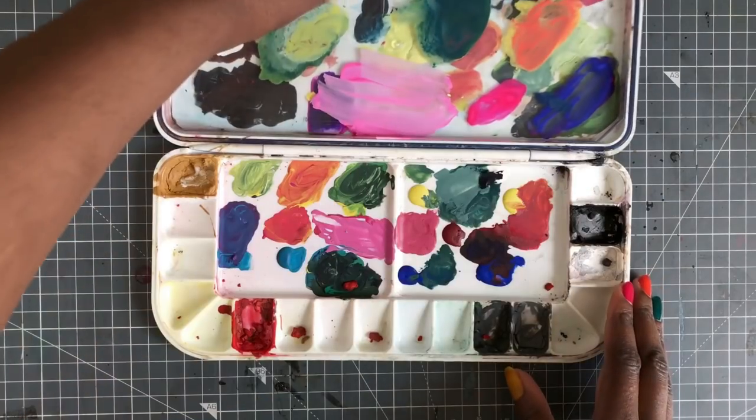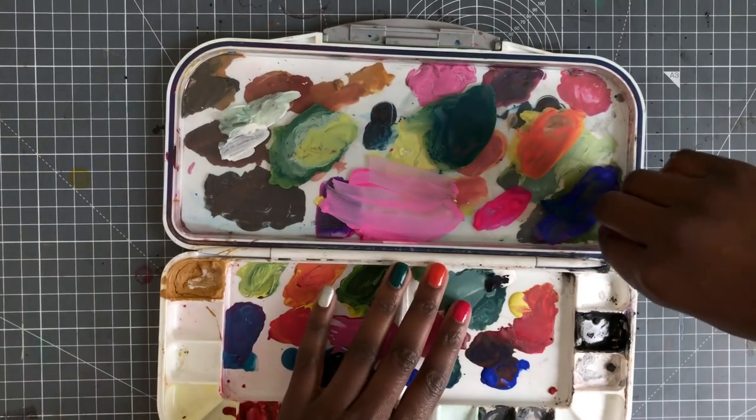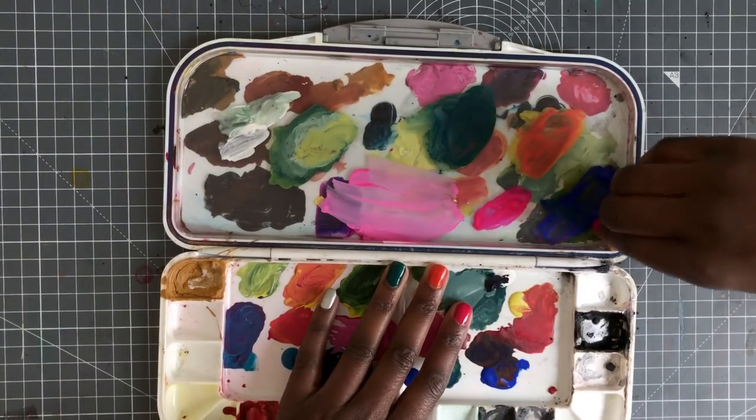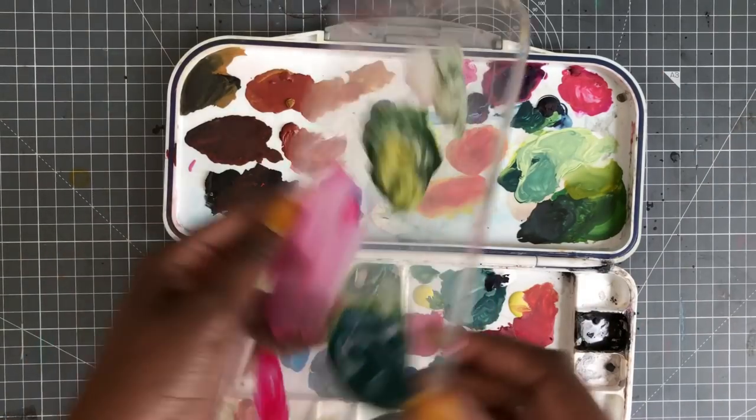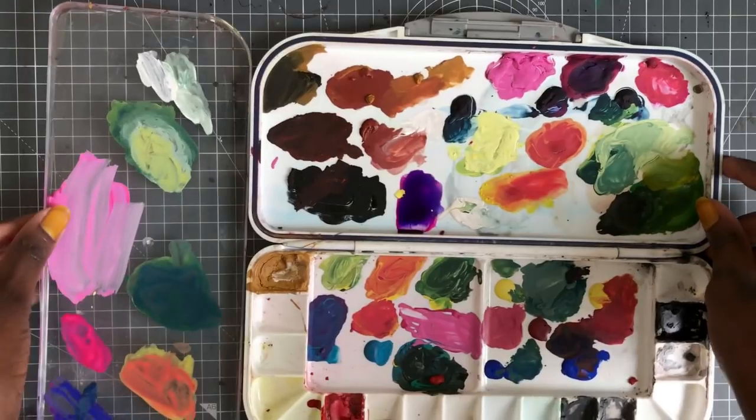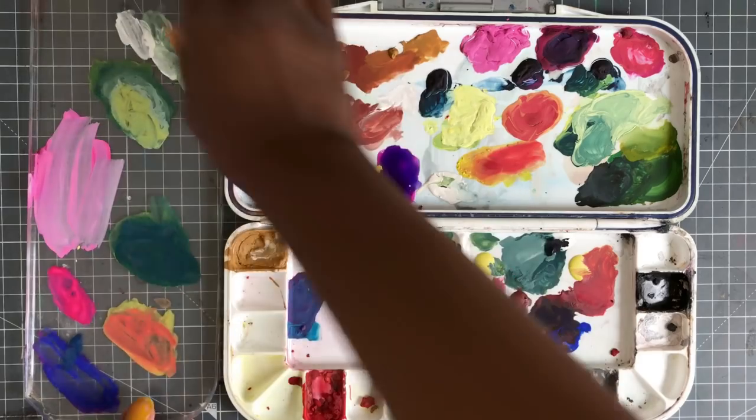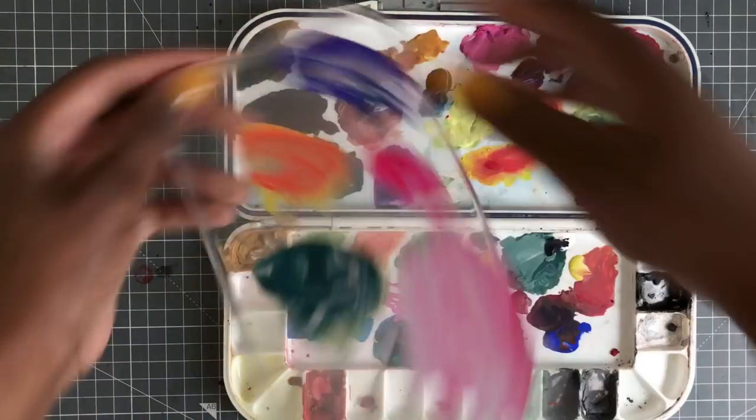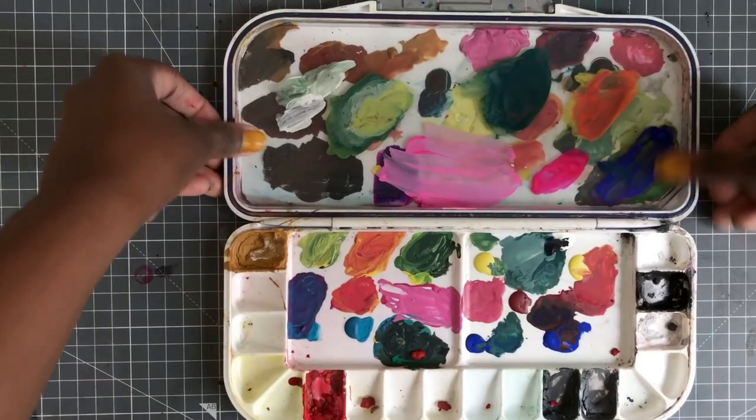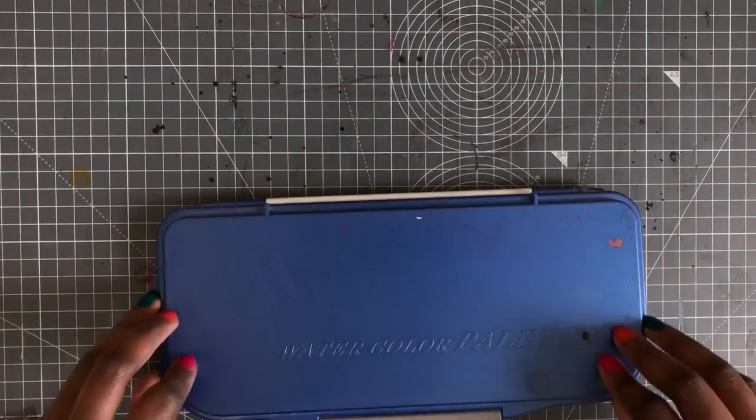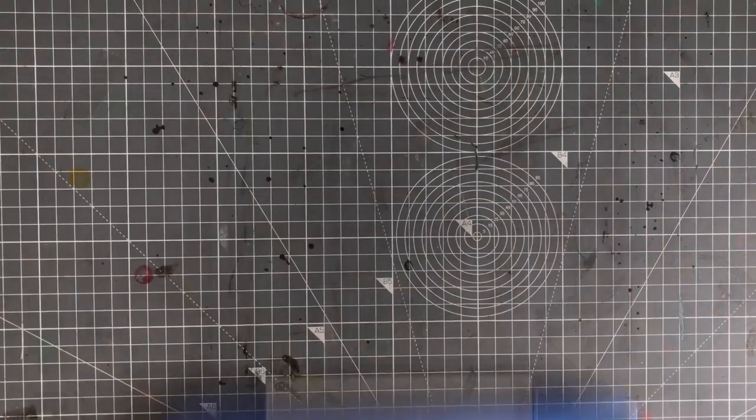So my first gouache palette was the Mijello Fusion 18 Well palette. I got this because it was labeled as airtight and it was a really great first palette for gouache. It comes with a little tray that comes out so you end up with two smaller mixing areas and two bigger mixing areas which is really cool. Normally I only have my Zorn palette in this now but I was also using the mixing areas for another project.